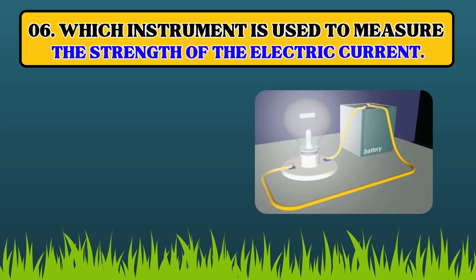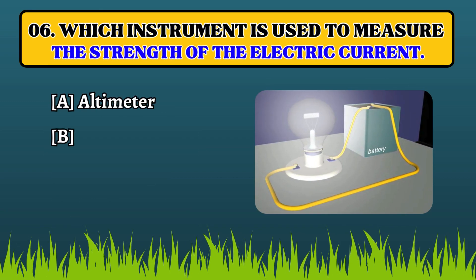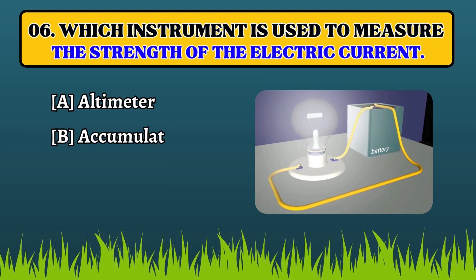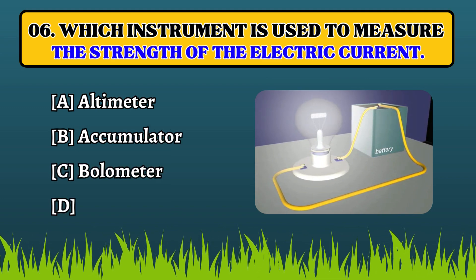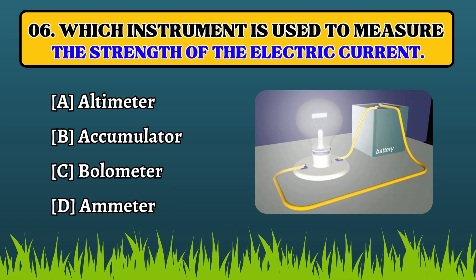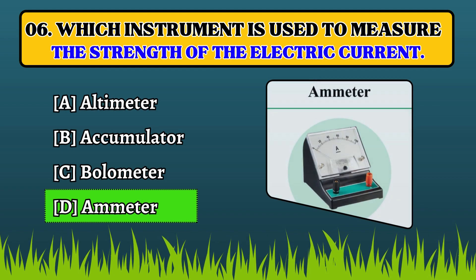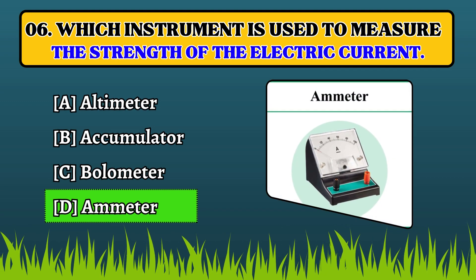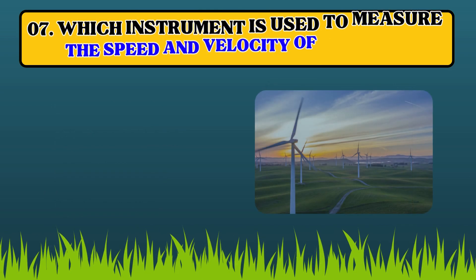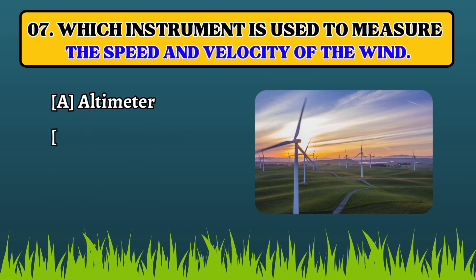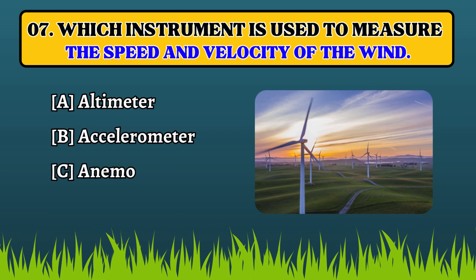Which instrument is used to measure the strength of electrical current? Ammeter. Which instrument is used to measure the speed and velocity of wind? Anemometer.